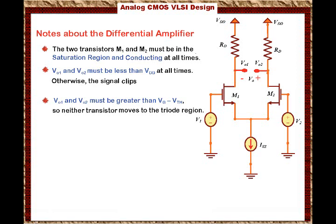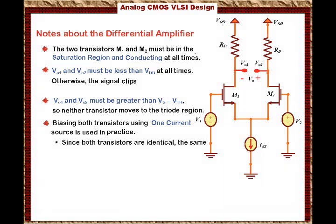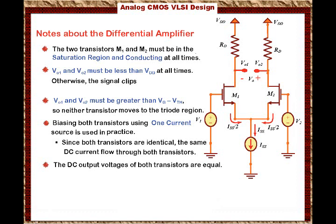Here is the next note. In general, biasing both transistors using one current source is used in practice. The way we bias this circuit is we use one current source as shown in the circuit. You can see that the sources of M1 and M2 are connected together into one current source. Since both transistors are identical, the same DC current flows through both transistors. Also, the DC output voltages of both transistors are equal, because both DC currents through both transistors are the same, and these currents flow through Rd. That means the DC voltages at the output are equal.